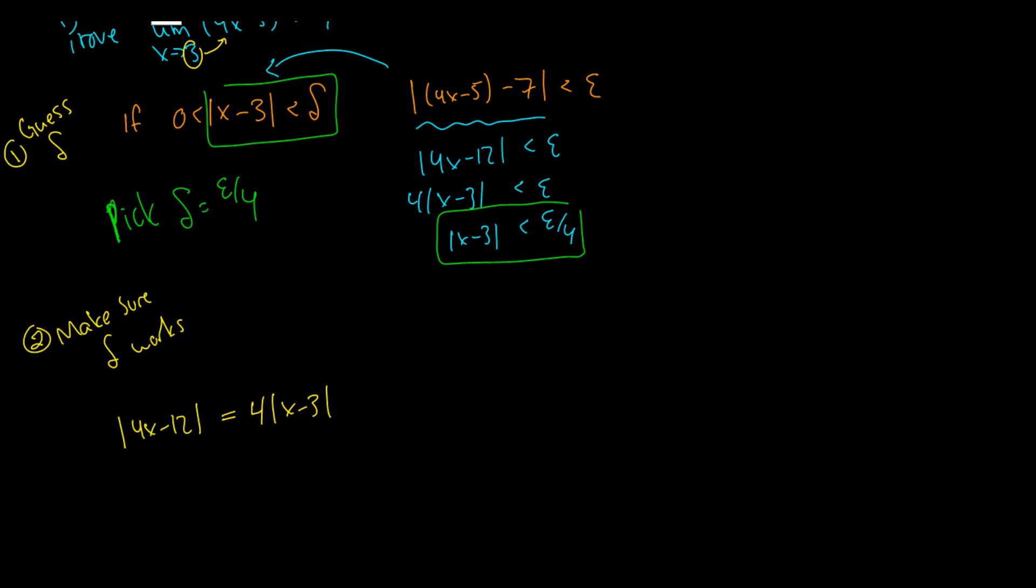We know that x minus 3 is less than or equal to, actually not less than or equal to, just x minus 3 is less than delta.